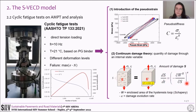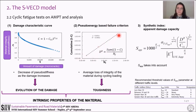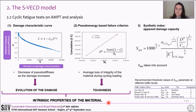The definition of S is based on the energy dissipated in each cycle, formulated by Schapery. Once defined the pseudo stiffness C and the damage variable S, their relationship is the so-called damage characteristic curve, which is the core of the SVCD theory. It shows the evolution of damage within the material, and its fit is a power law function defined by two parameters. The pseudo energy-based failure criterion is defined with the term DR, which is the slope of the average loss of integrity during cyclic loading. A higher DR value means a higher toughness of the material. These are the two main findings of the SVCD model, and they are very important since they are intrinsic properties of the material, which do not depend on test conditions such as temperature, frequency, or mode of loading.